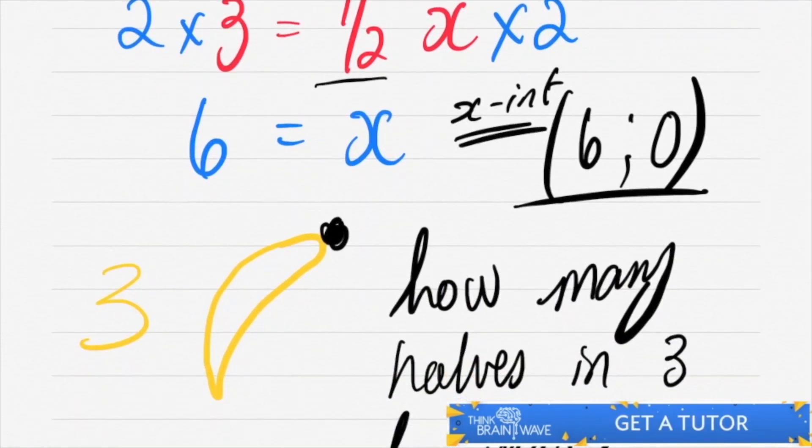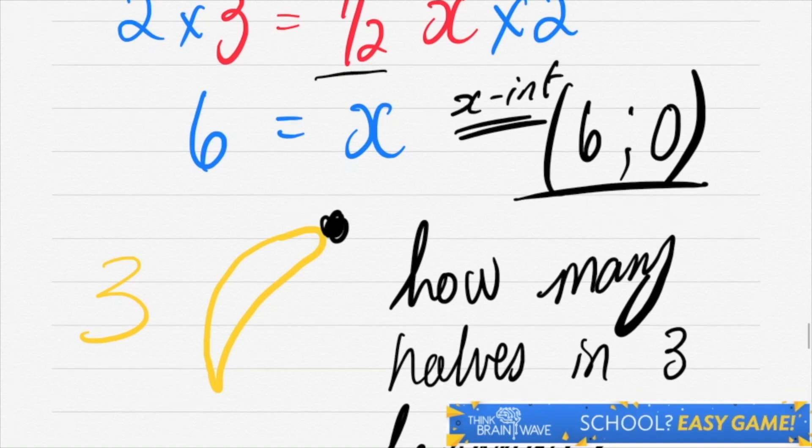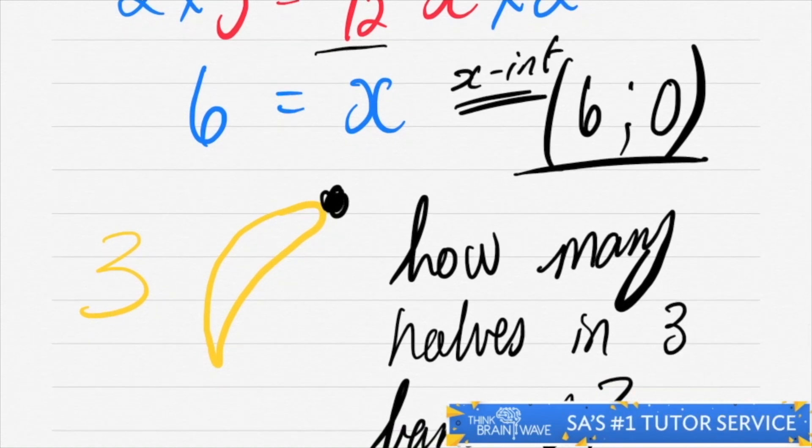Now if you ever get confused: if you've got three bananas, how many halves do you have? You've got six halves. So if you had to divide three by a half, you'd still get six.